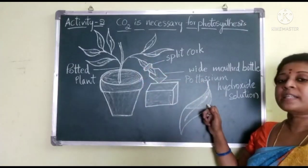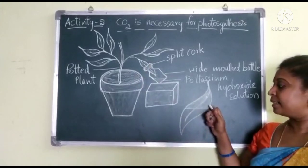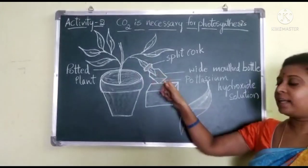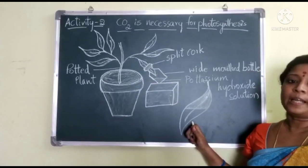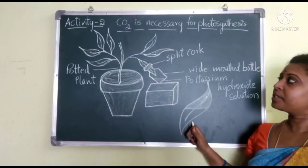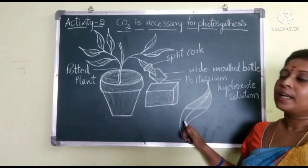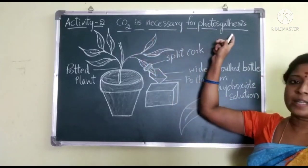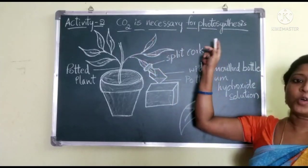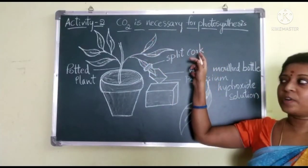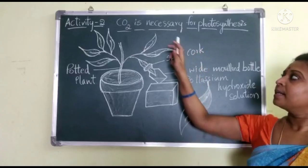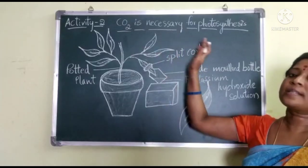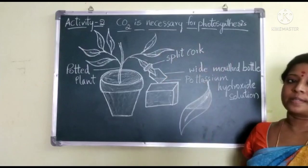So the portion of the leaf outside the bottle turned blue-black, and the half of the leaf inside the bottle remained pale. By this activity, we have proved that CO2 is necessary for photosynthesis.